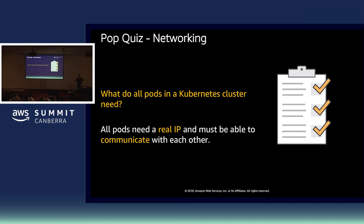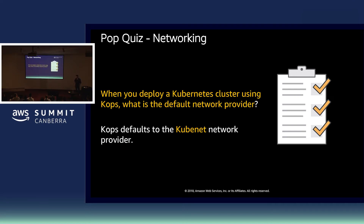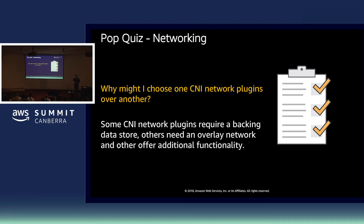If you want to look more into this VPC CNI plugin, I'd encourage you to hop along to the link provided. Pop quiz time again: what do all pods in a Kubernetes cluster need? IP addresses — and they all need to be able to communicate. When you deploy a cluster using KOPS, what is the default networking provider? Kubenet. And why might you choose one CNI network plugin over another? Capabilities — maybe you need an overlay network, a data store, or network policies.